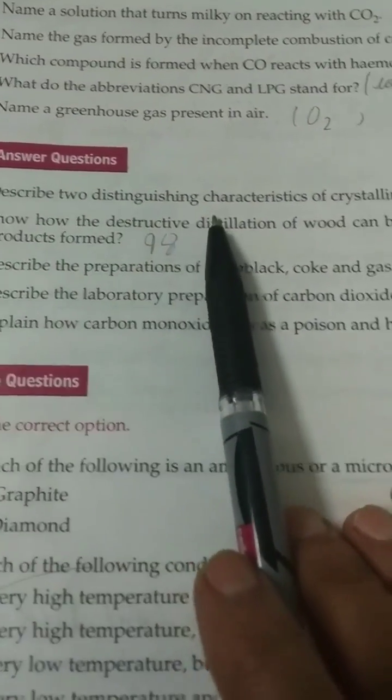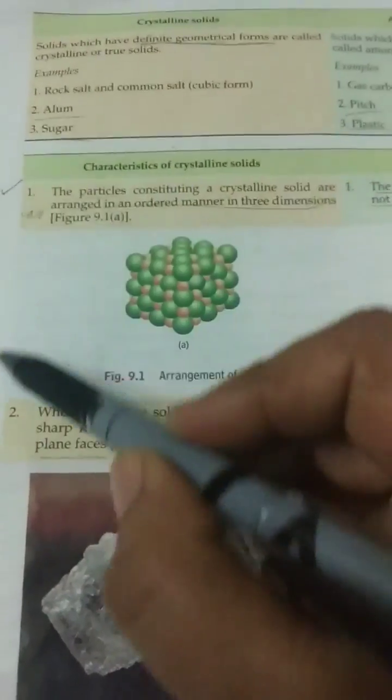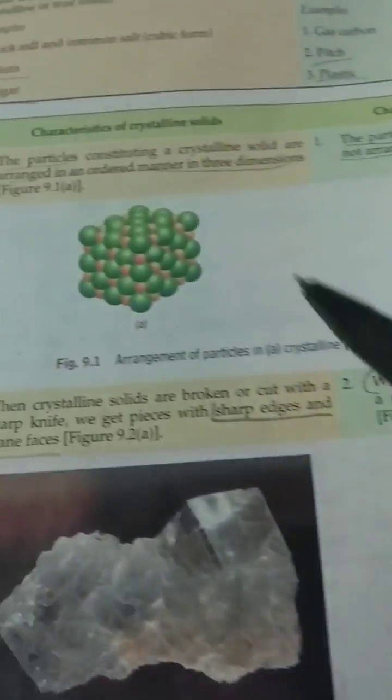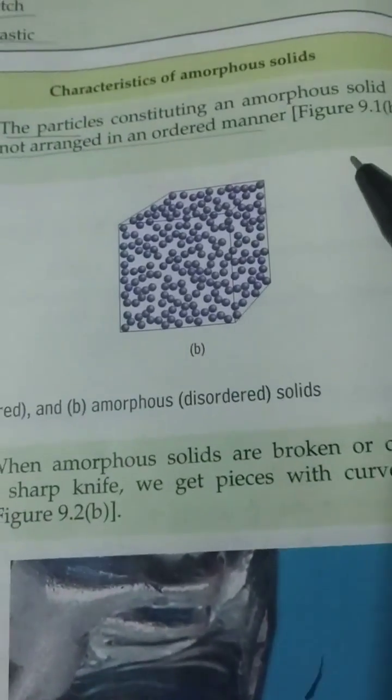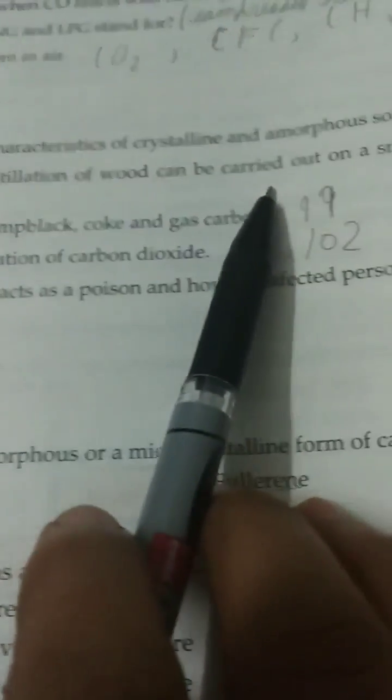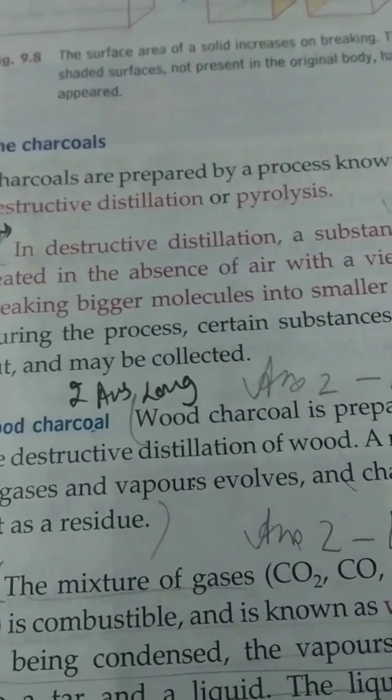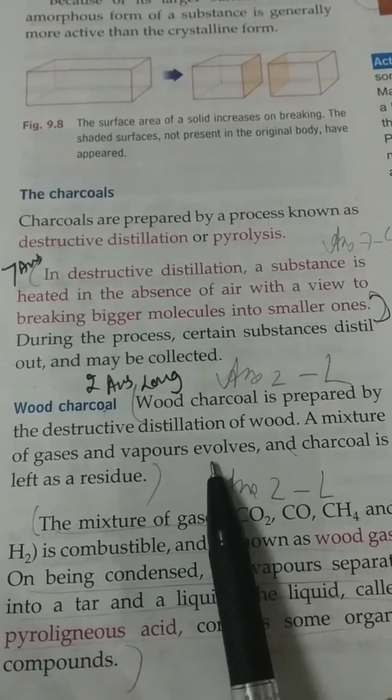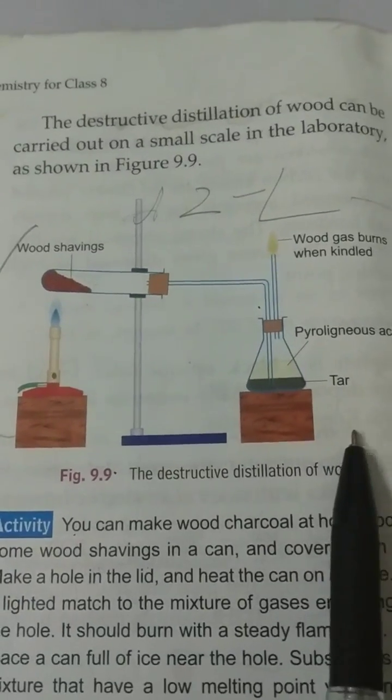Long answer questions. Describe two distinguishing characteristics of crystalline and amorphous solids. See page number 94. On page number 94, two characteristics they have given for crystalline solid and for amorphous solid. You will learn this one. This one is the first long answer. Two points for crystalline and two points for amorphous. Second, show how the destructive distillation of wood can be carried out on a small scale. What are the products formed? Page number 98. Wood charcoal is prepared by destructive distillation of wood. A mixture of gases and vapor evolves and charcoal is left as residue. And this diagram you will draw with this answer.